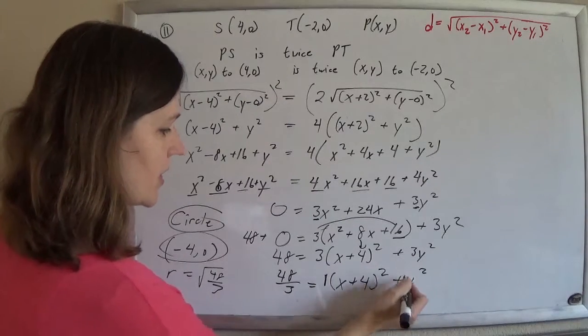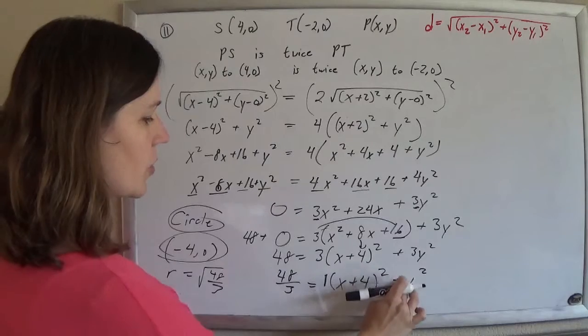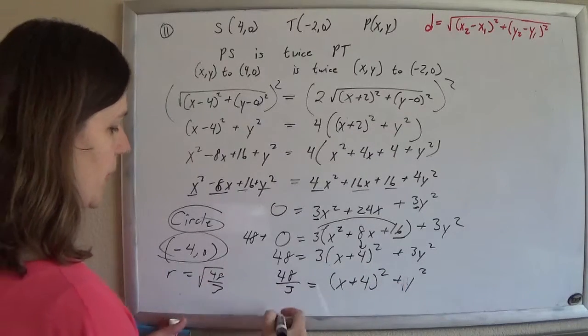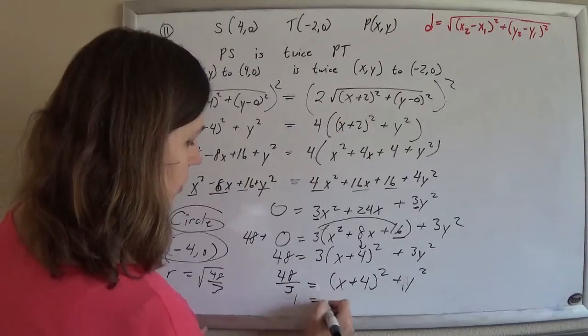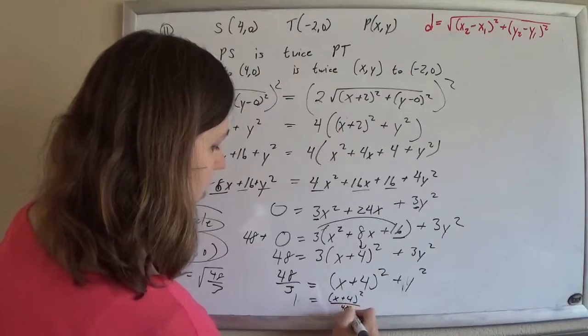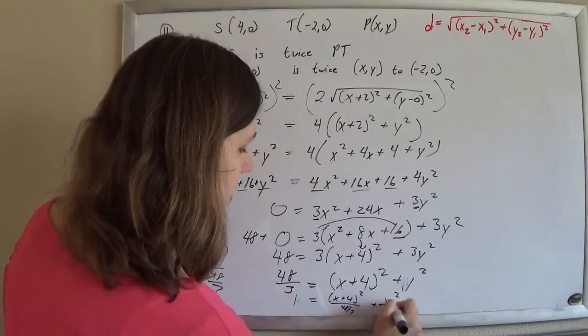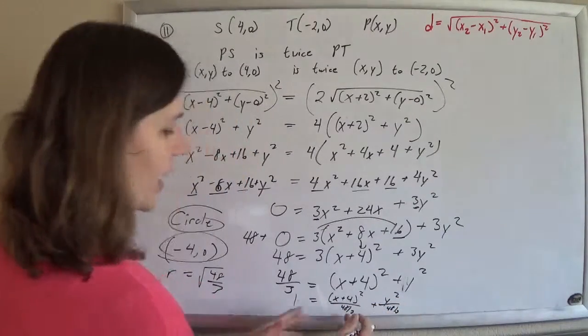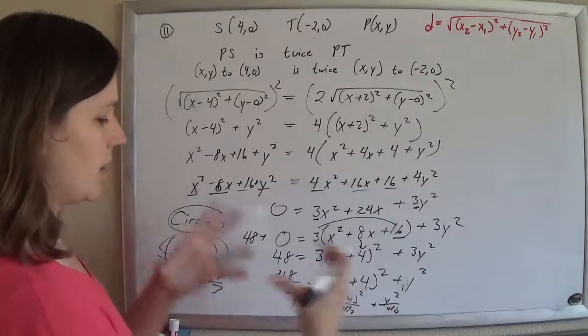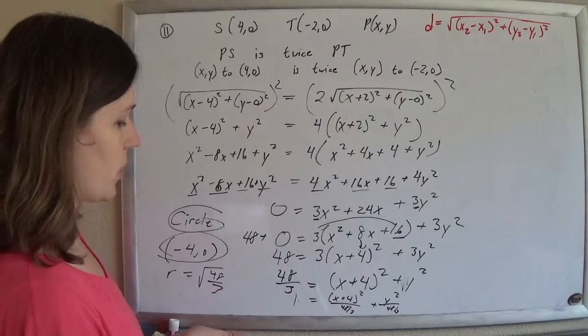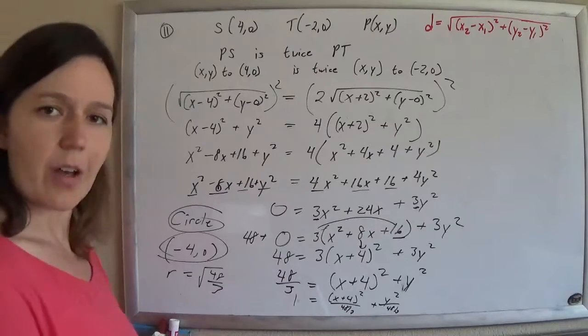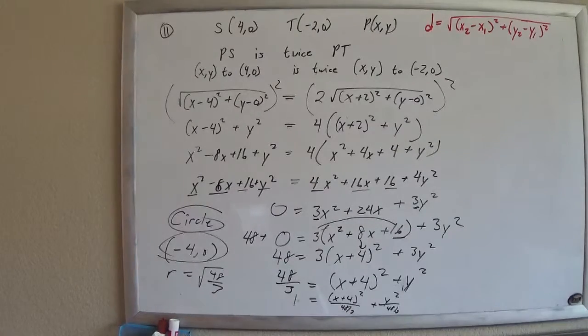You can tell because the coefficients are the same. A circle is just really a special form of an ellipse. If you were to go ahead and divide everybody by 48 thirds, you'd get 1 equals (x+4)² over 48/3 plus y² over 48/3. And you would see that it would go right and left the same amount it went up and down. So that makes a circle. There you go. That is all.